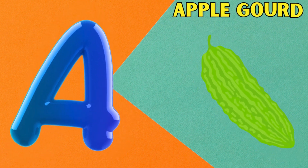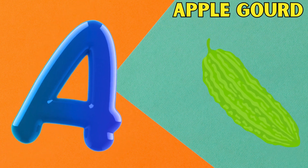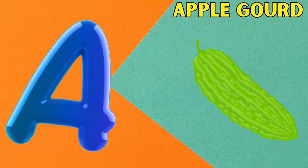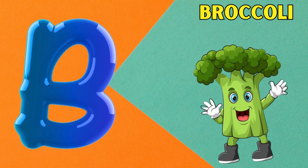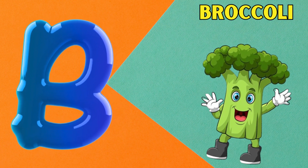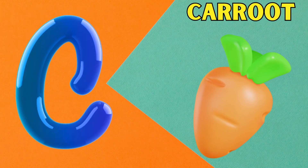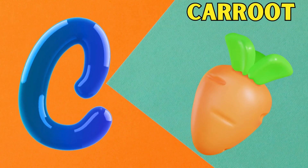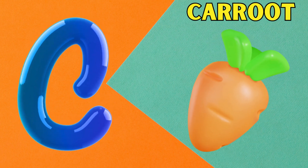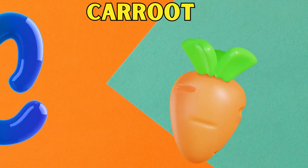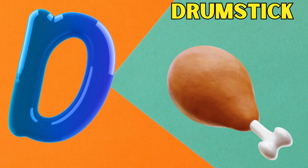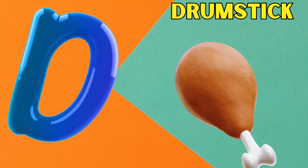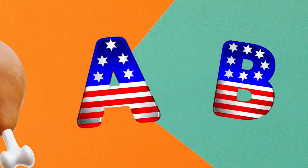A is for apple gourd. B is for broccoli. C is for carrot. D is for drumstick.